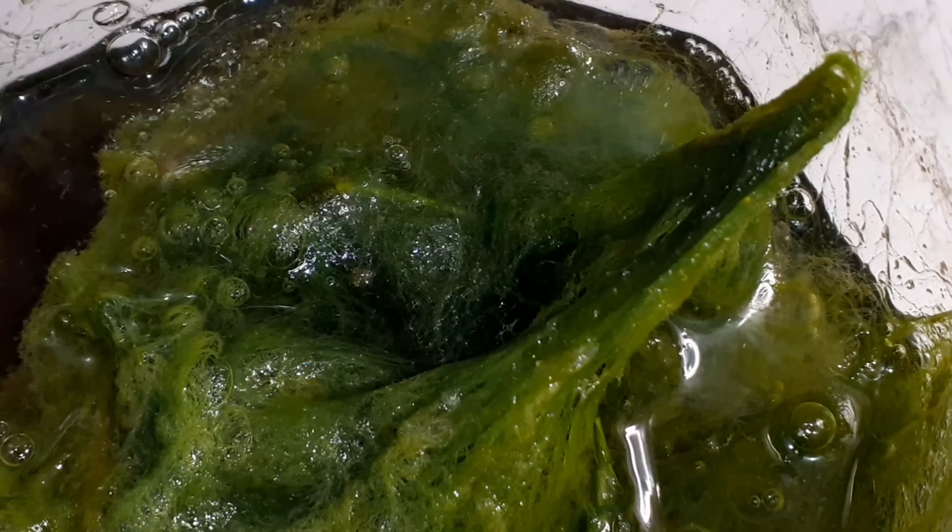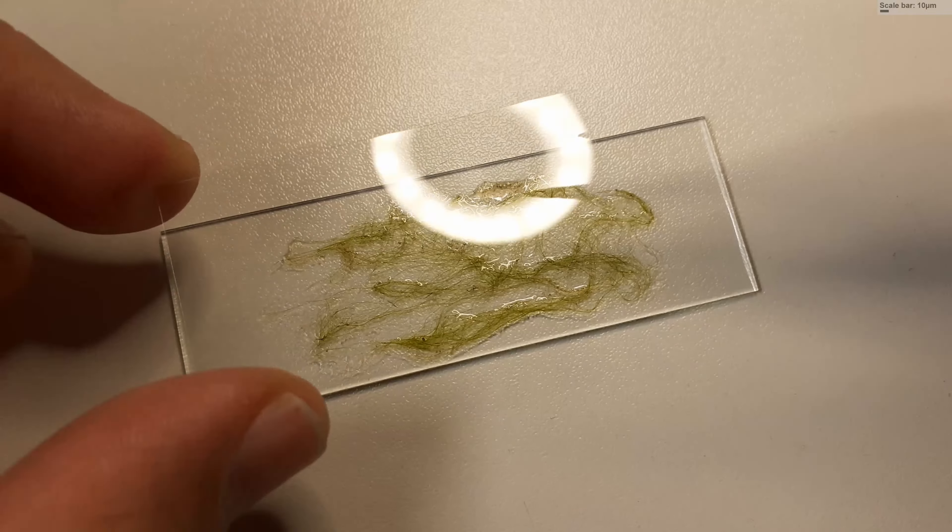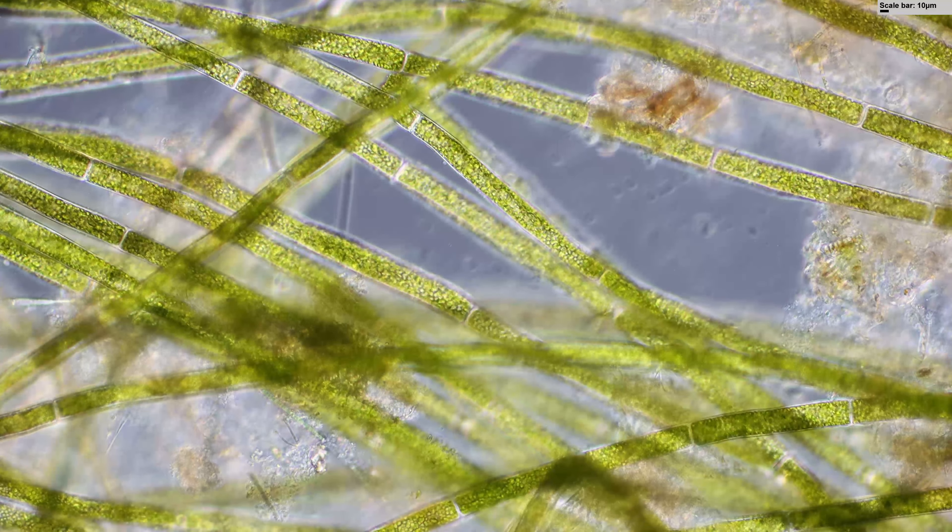The plants that live in the water further down in the pond don't get enough light. Those algae mats can also be another problem for boats, for example, that might get entangled in those algae, and they also don't look very pretty.